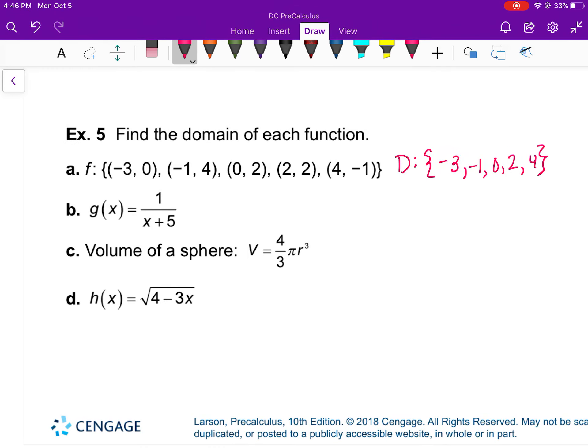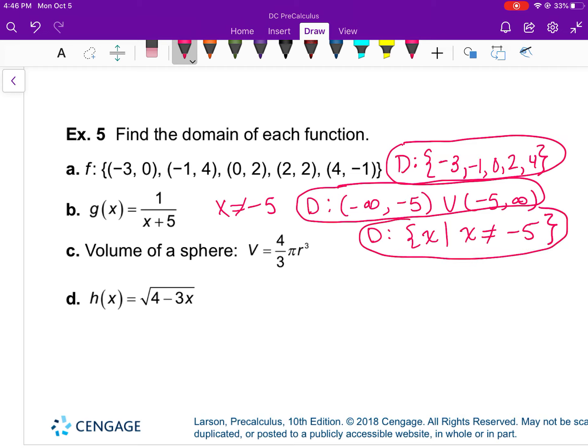For this one, it's got an implicit domain. It's implied that x cannot equal negative 5. So I could write my domain as negative infinity to negative 5, union negative 5 to infinity. You could also do set builder notation: it's all x such that x can't equal negative 5. So you can do either type of notation there. You don't have to have both.